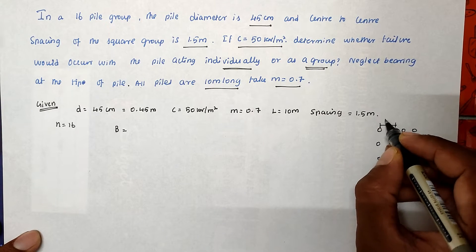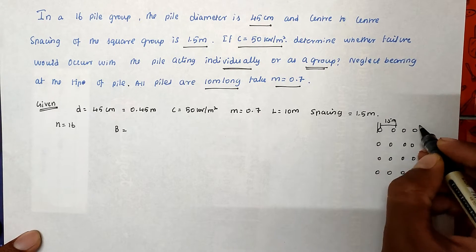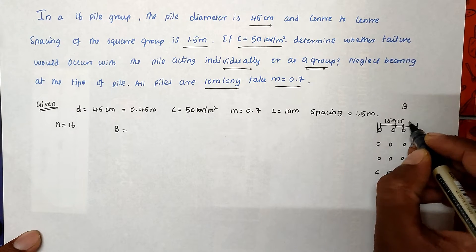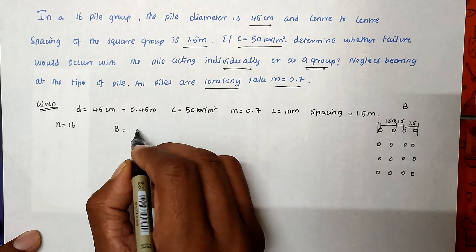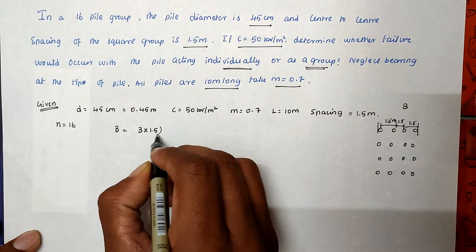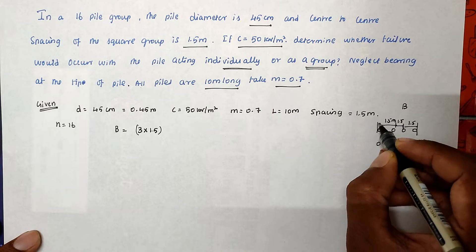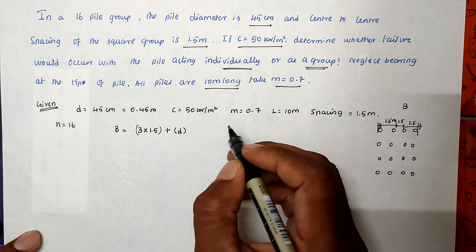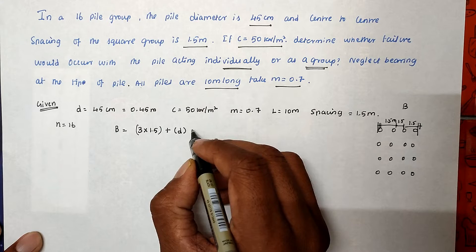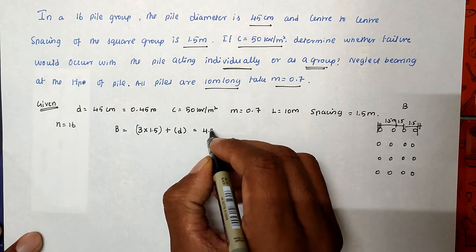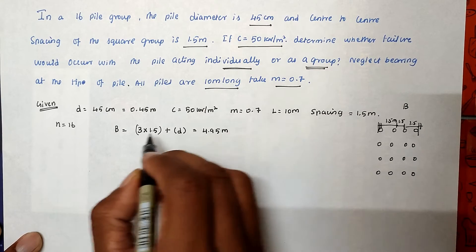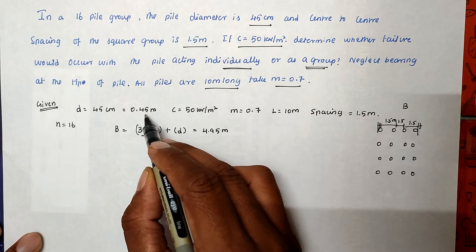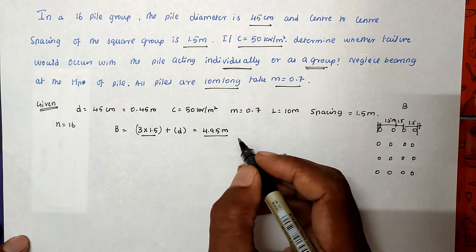The spacing is 1.5 m. For the total breadth B, there are 3 spacings of 1.5 m each, giving 3 × 1.5 = 4.5 m. Then we add half a diameter on each side: diameter/2 + diameter/2 = 1 diameter = 0.45 m. So B = 4.5 + 0.45 = 4.95 m.